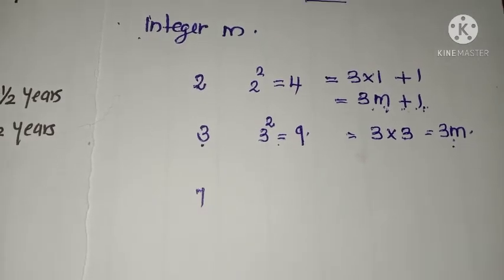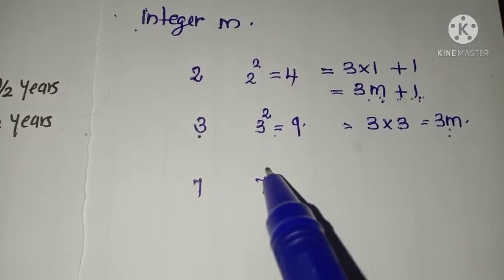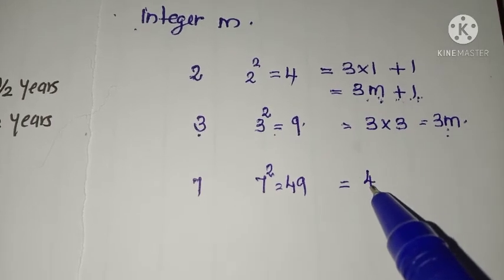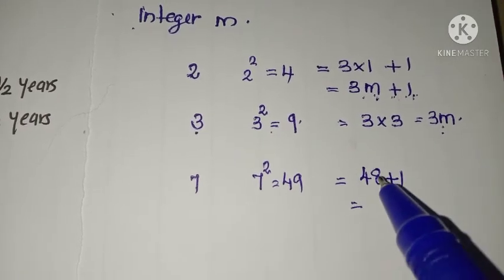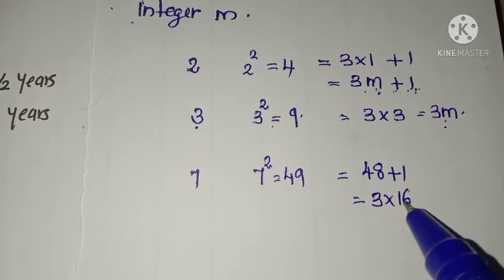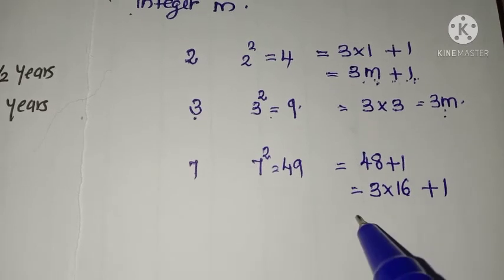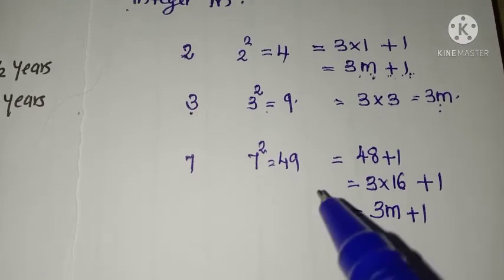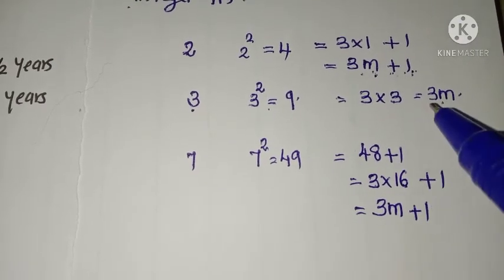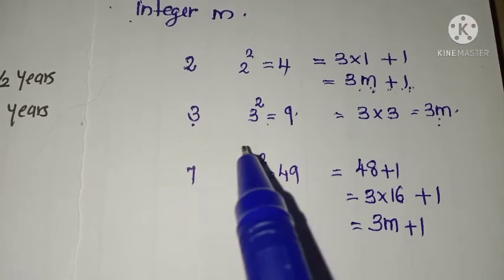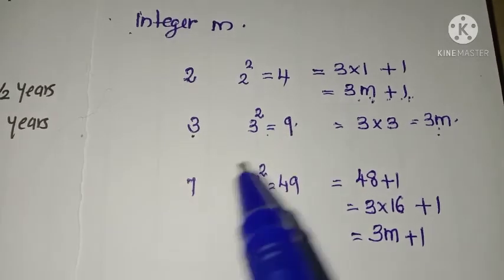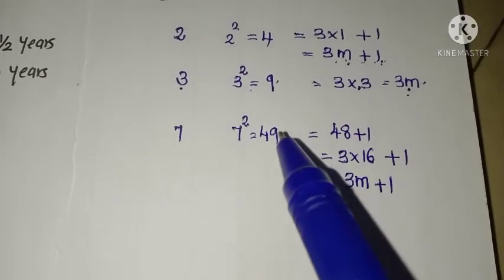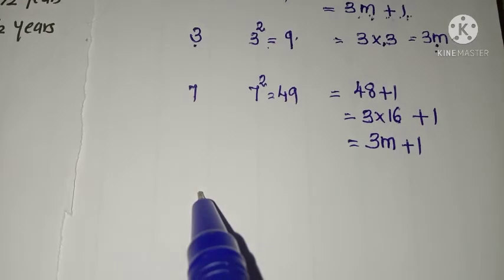Suppose we have another example: 7. Its square is 49. This 49 can be written as 48 plus 1, and 48 is 3 into 16, so it is 3 into 16 plus 1 — of the form 3m plus 1. You can go through more examples and verify this result. So, the square of any positive integer can be expressed as either the 3m form or the 3m plus 1 form.